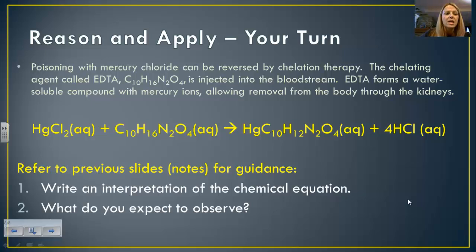Now it's going to be your turn. Here's a scenario. Poisoning with mercury chloride, as we know, mercury can be a toxic substance and can be reversed by chelation. For people who somehow get mercury into their system by ingesting it, they will use a chelating agent that actually draws the mercury out of the bloodstream, and they will inject that in there, and it attracts the mercury ions to it and allows it to get removed through the kidneys. Here is the chemical equation for that reaction. So what I want you to do, and you may have to look at your previous slides, is write an interpretation in words and also tell me what you expect to observe. Bring this to class with you tomorrow and along with any questions, and that will end our screencast for today.